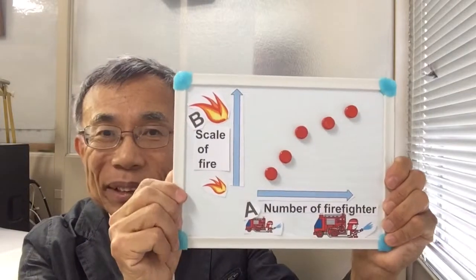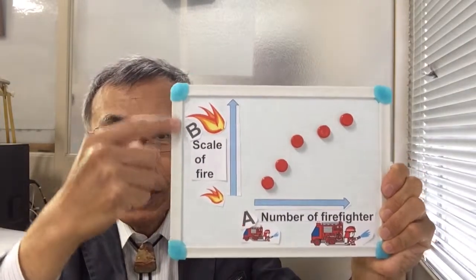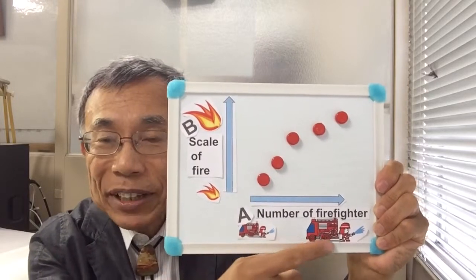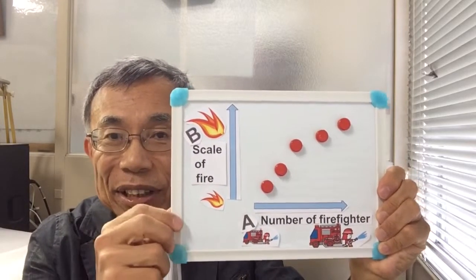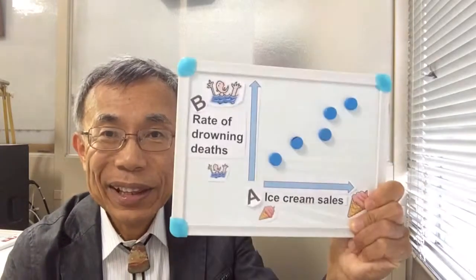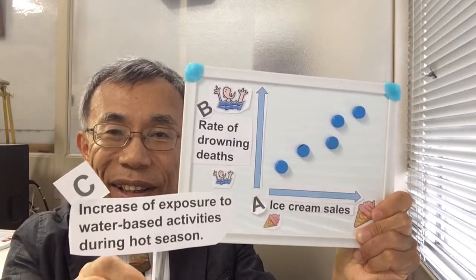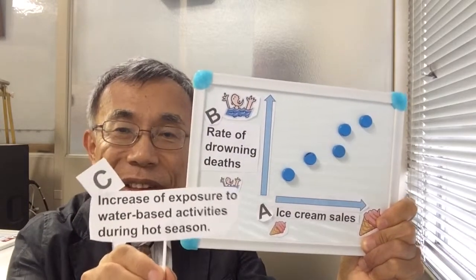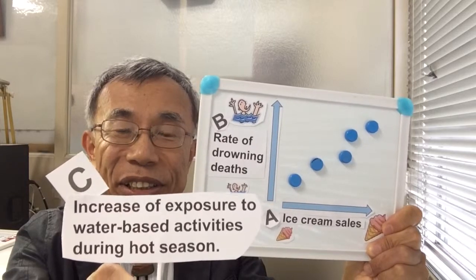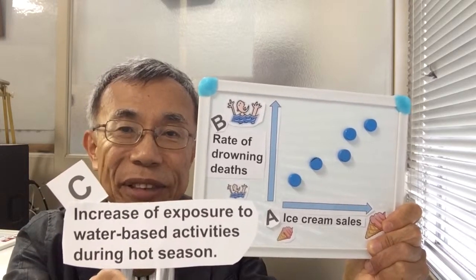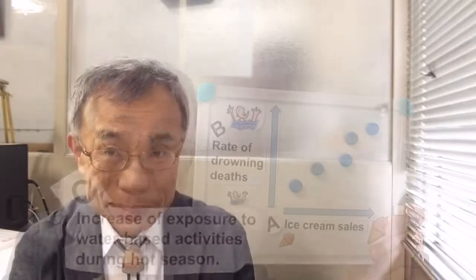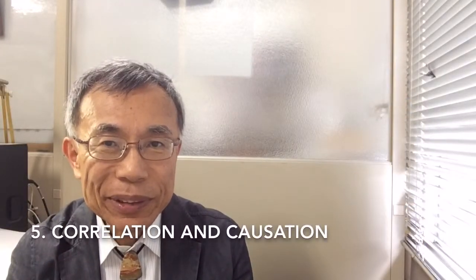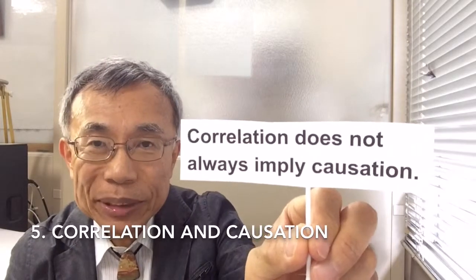The correct relationship is as follows. For Case 1: B, scale of fire, causes A, the number of firefighters — this is reverse causation. For Case 2: a third factor C, the common causal variable, causes both A and B. The third factor C is the increase of exposure to water-based activities during the hot season. From these lessons, we conclude that correlation does not always imply causation.